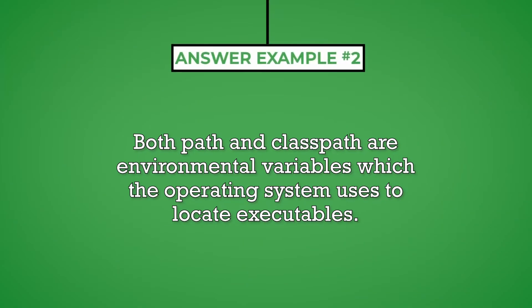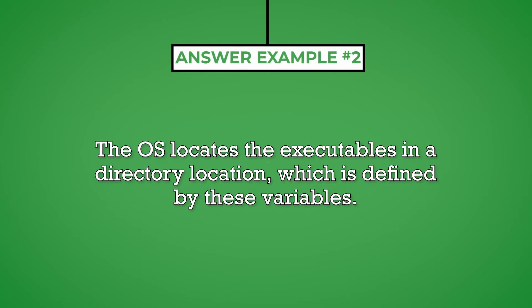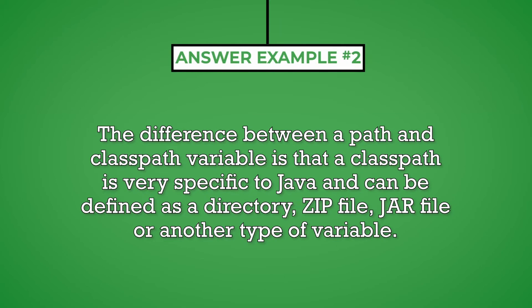Both path and class path are environmental variables which the operating system uses to locate executables. The OS locates the executables in a directory location, which is defined by these variables. The difference between a path and class path variable is that a class path is very specific to Java and can be defined as a directory, zip file, jar file, or another type of variable.